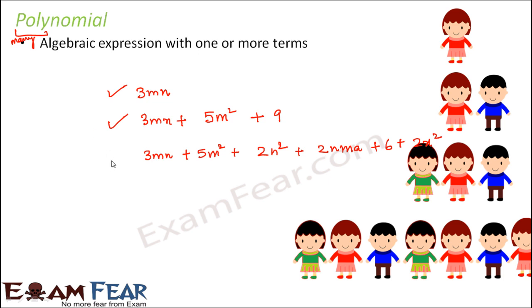4, 5, 6 terms. So this is also a polynomial. So basically any expression with multiple number of terms or even one term, they all fall under the category of polynomial.